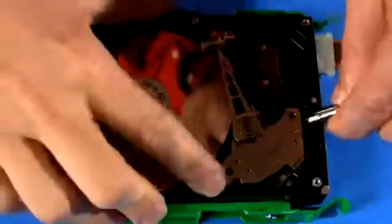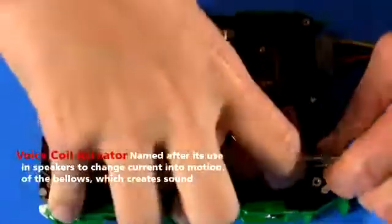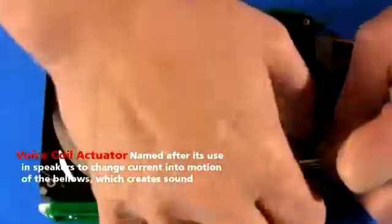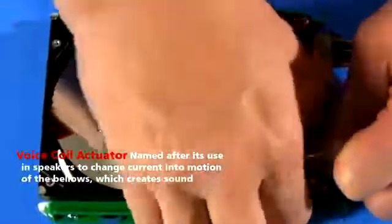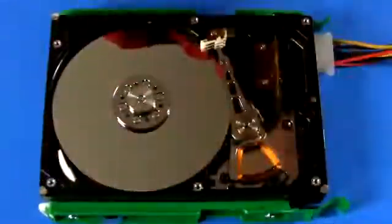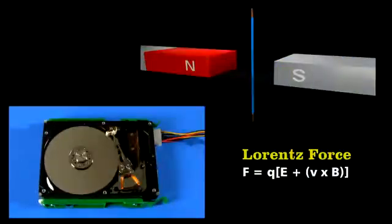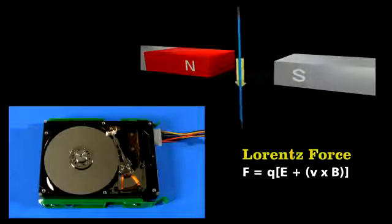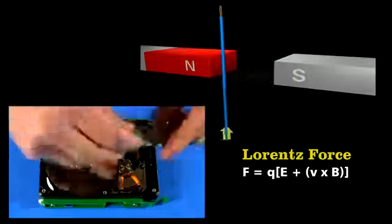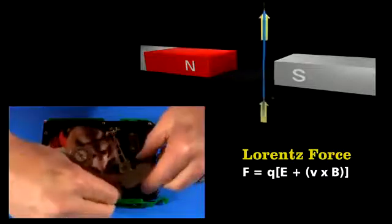To position the arm, engineers use a voice coil actuator. The base of the arm sits between two powerful magnets. They're so strong, they're actually kind of hard to pull apart. The arm moves because of a Lorentz force. Pass a current through a wire that's in a magnetic field, and the wire experiences a force. Reverse the current, and the force also reverses.